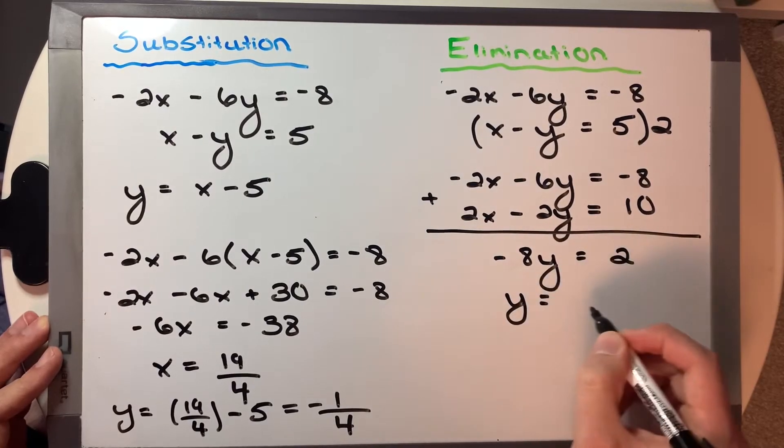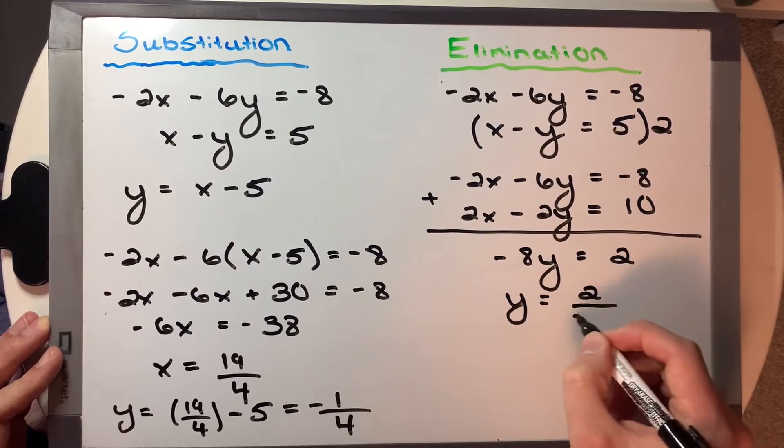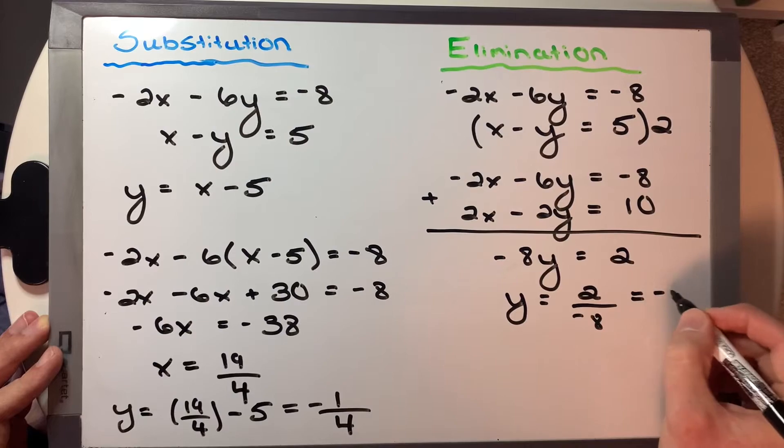Therefore, y is equal to 2 over negative 8, which is equal to negative 1 quarter.